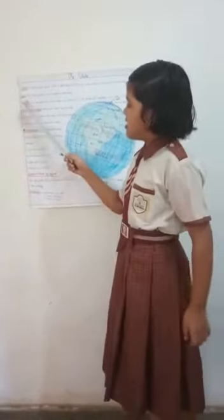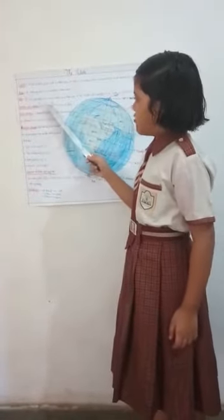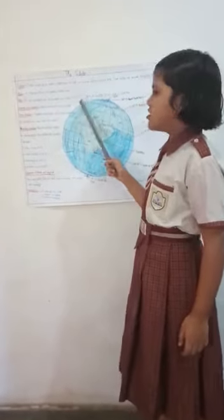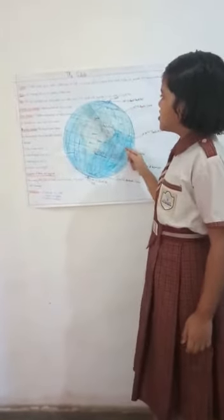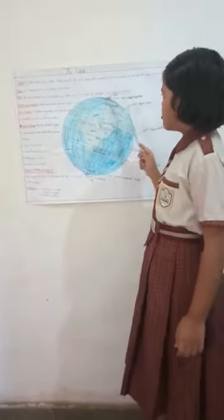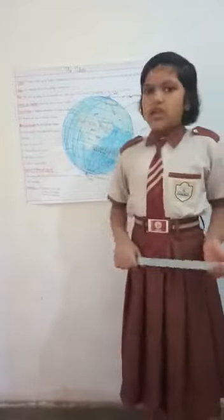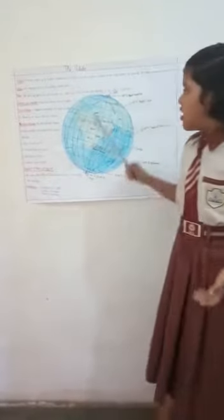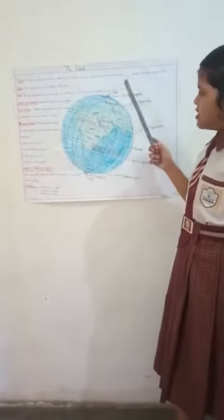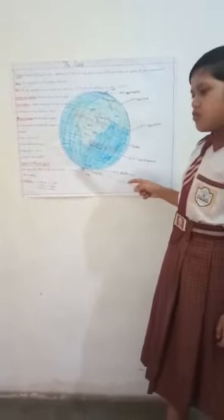Poles: The two end points of the axis of rotation are called poles. To the north is the North Pole, and to the south is the South Pole. The two end points are poles.